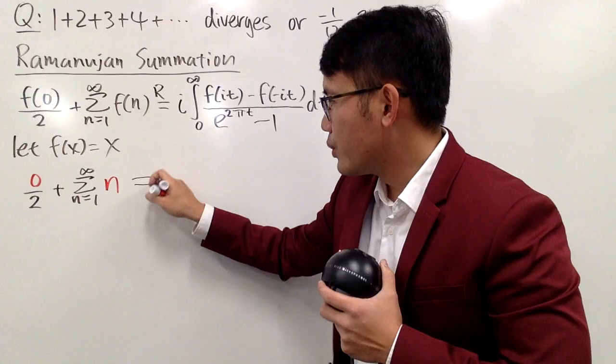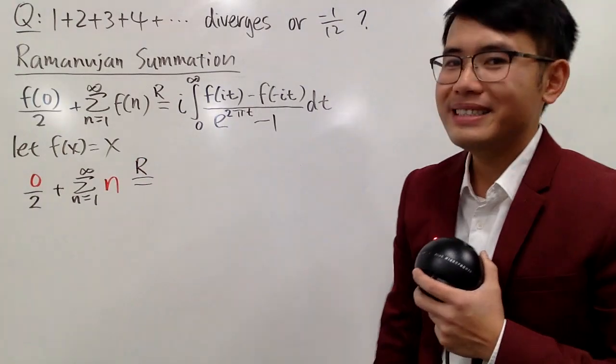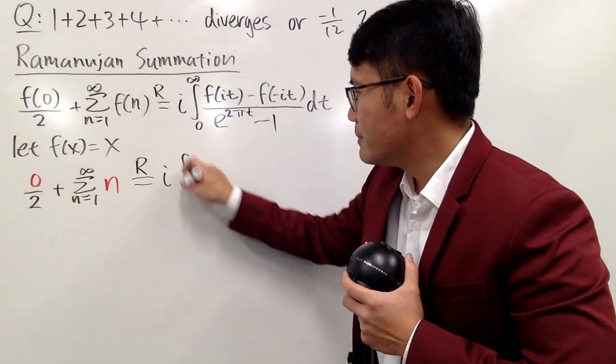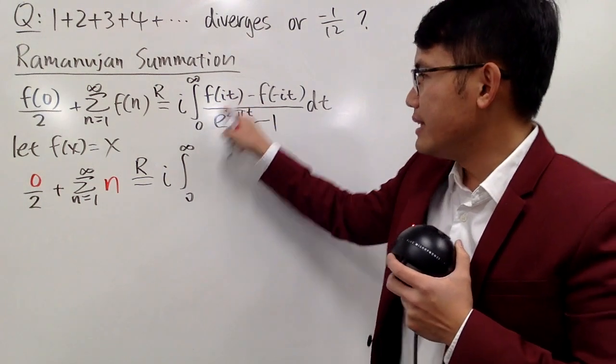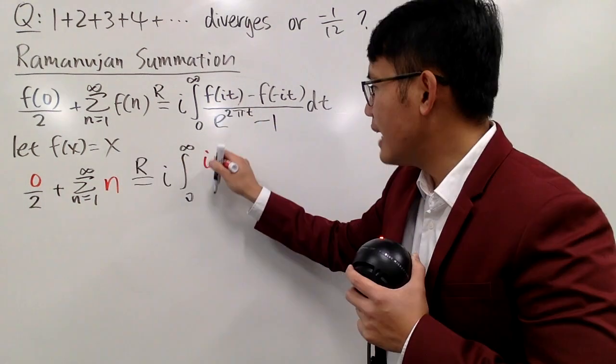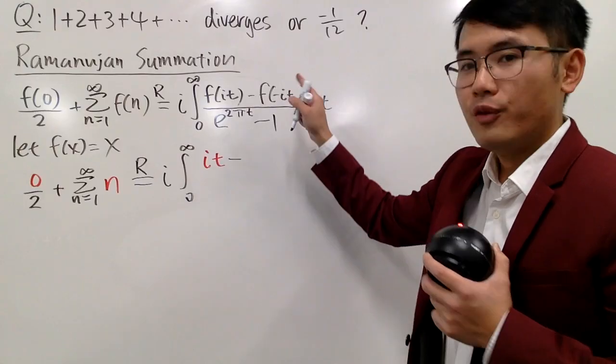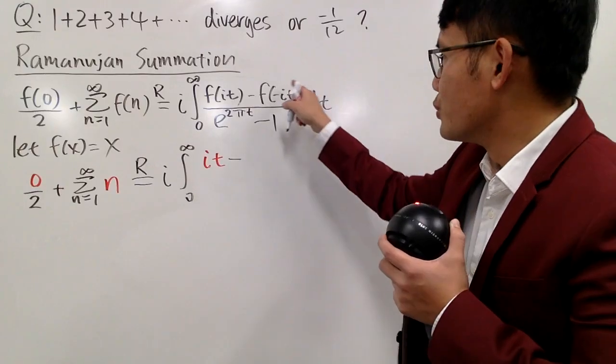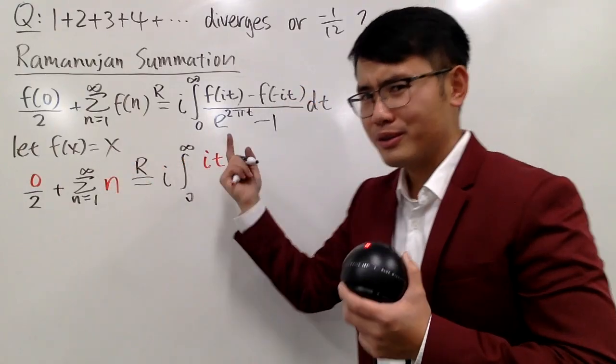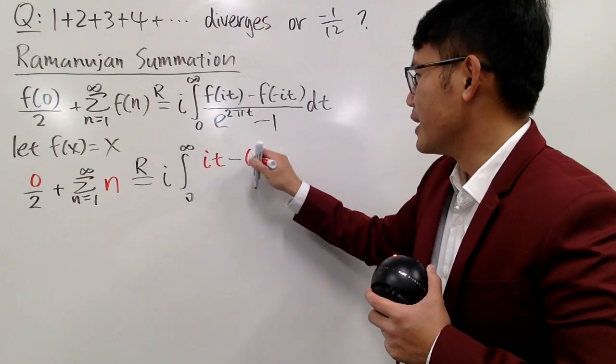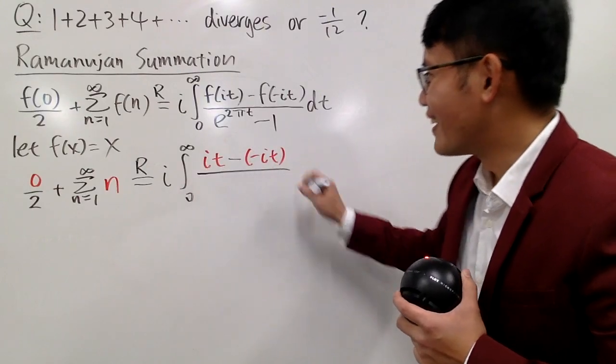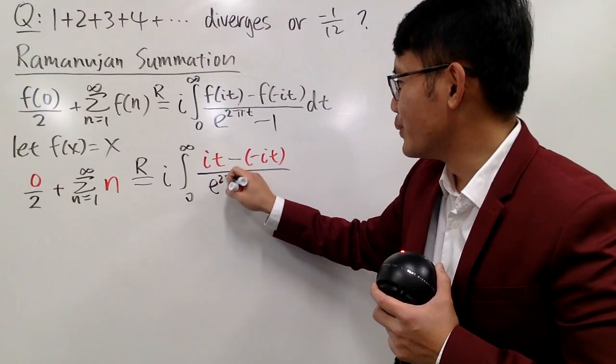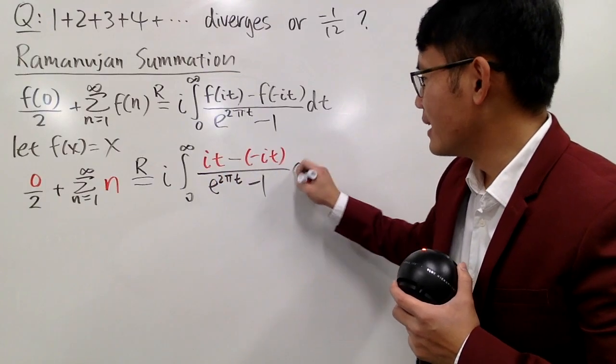And you see, when f of x is simply just x, f of n, you put n into x, which is just n. So you just get the sum of n when n goes from 1 to infinity, namely, you pretty much have this. This is equal to, with an r on the top, i times the integral from 0 to infinity. f of i t, you just put i t into this x, so you just get i t, and then minus, for f of negative i t, we will just have negative i t.